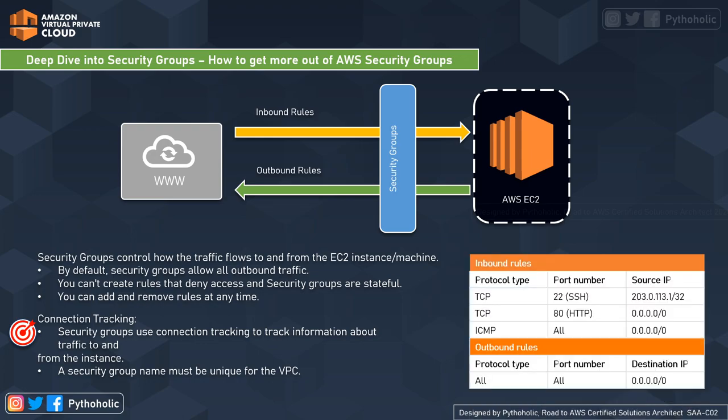When we talk about security groups, a very important concept is connection tracking. In EC2 instances, if you send a request from your instance, the response traffic for that request is allowed to flow in regardless of the inbound security group rules. That is what makes security groups stateful, and that is achieved by connection tracking.